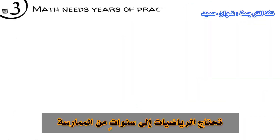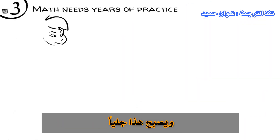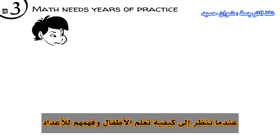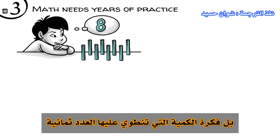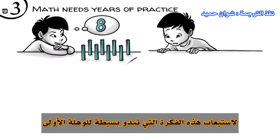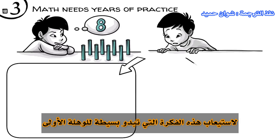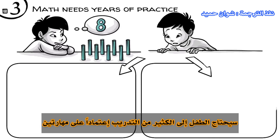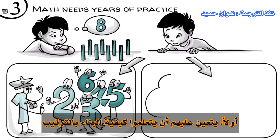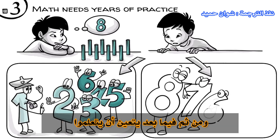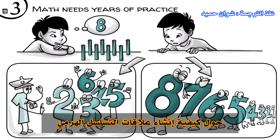Math needs years of practice. This becomes clear when we look at how children learn to understand a number, say 8 — not the symbol 8, but the idea of the quantity of 8. To internalize this seemingly simple idea, children need a lot of practice in two skills: first, they need to learn how to create order, and then, later on, how to create hierarchical relationships.